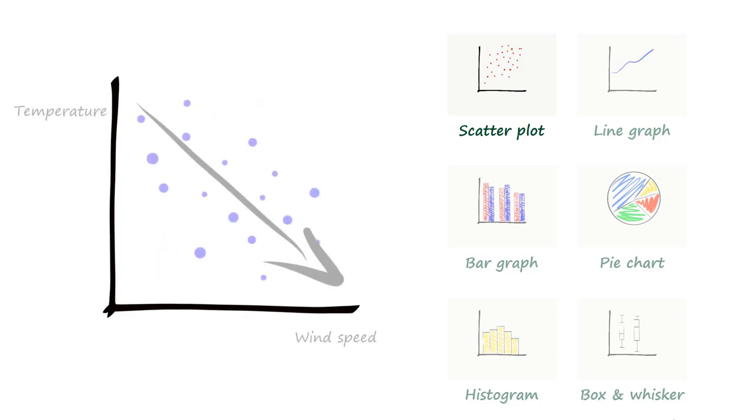This is an example of a negative correlation as temperature decreases with higher wind speeds. Sometimes there can be no correlation between variables. For example, birth month and height.